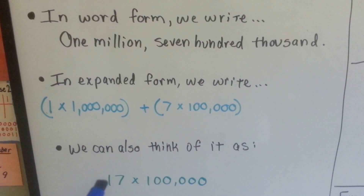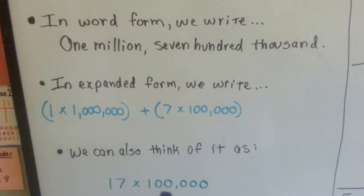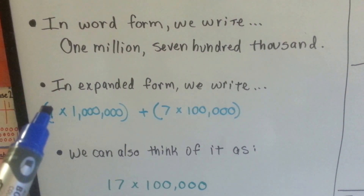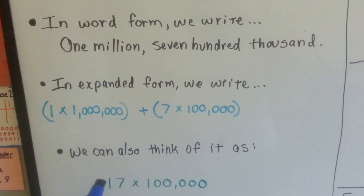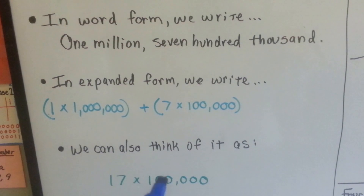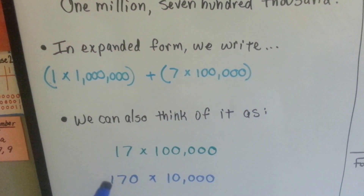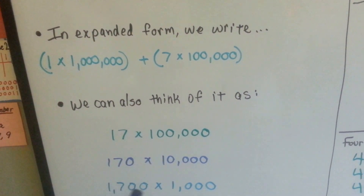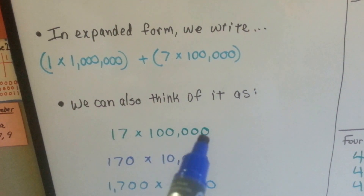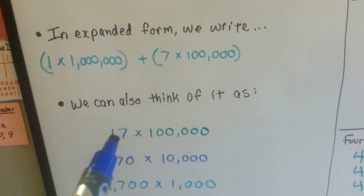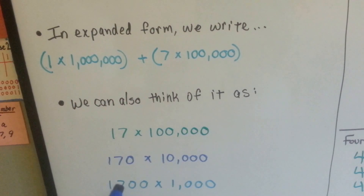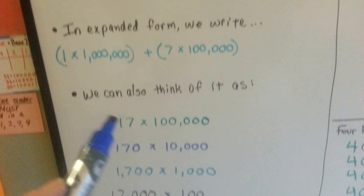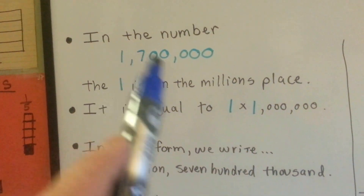We can also think of it as seventeen times one hundred thousand. Instead of just seven times one hundred thousand, we can move the one over and say seventeen times one hundred thousand. We can also say a hundred and seventy times ten thousand, or one thousand seven hundred times one thousand. We're just taking the zeros off of one side and putting them onto the other side. So seventeen thousand times a hundred would still be one million seven hundred.